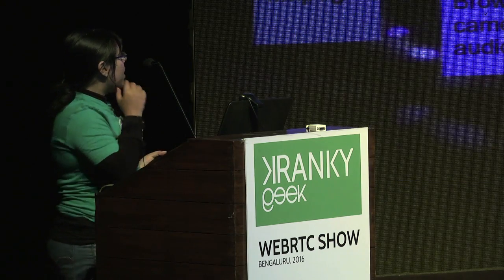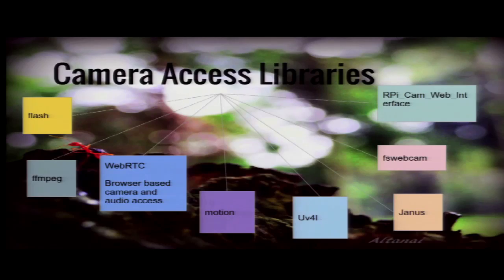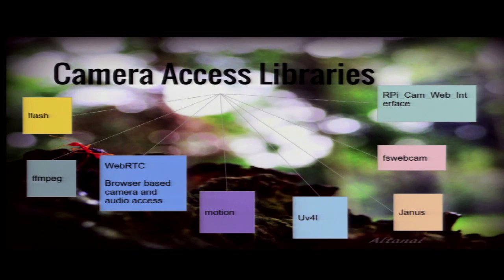What are the camera access libraries a Raspberry Pi developer has as options? Mostly people use Motion because it's really easy — I also used it initially. Then I tried experimenting with others: FSBlue cam for direct webcam use, Janus Gateway which is very good, then direct WebRTC to the browser which works with a couple of plugins like IceWeasel. Now with Raspberry Pi 2, you can use UV4L with the WebRTC driver and it works.